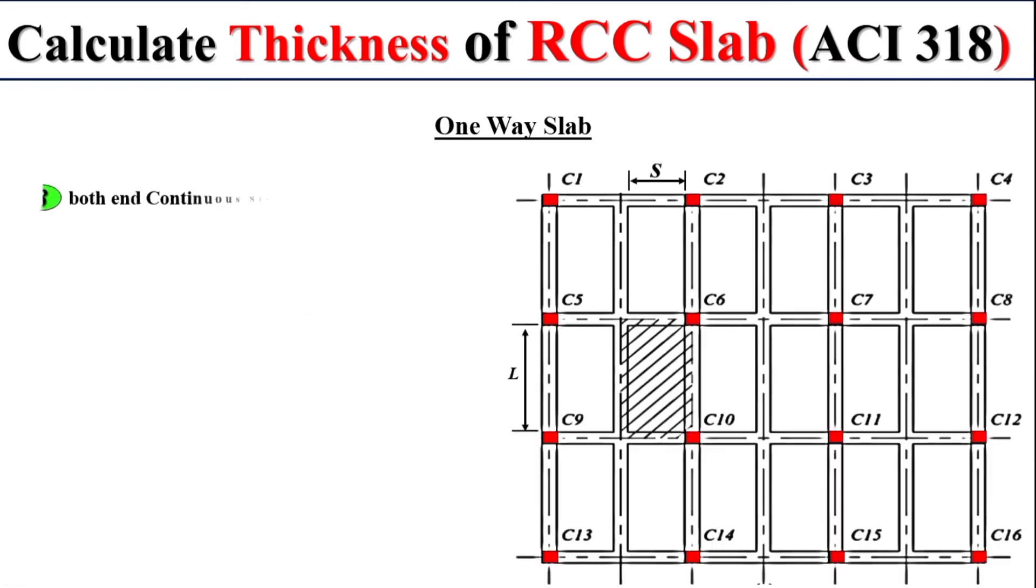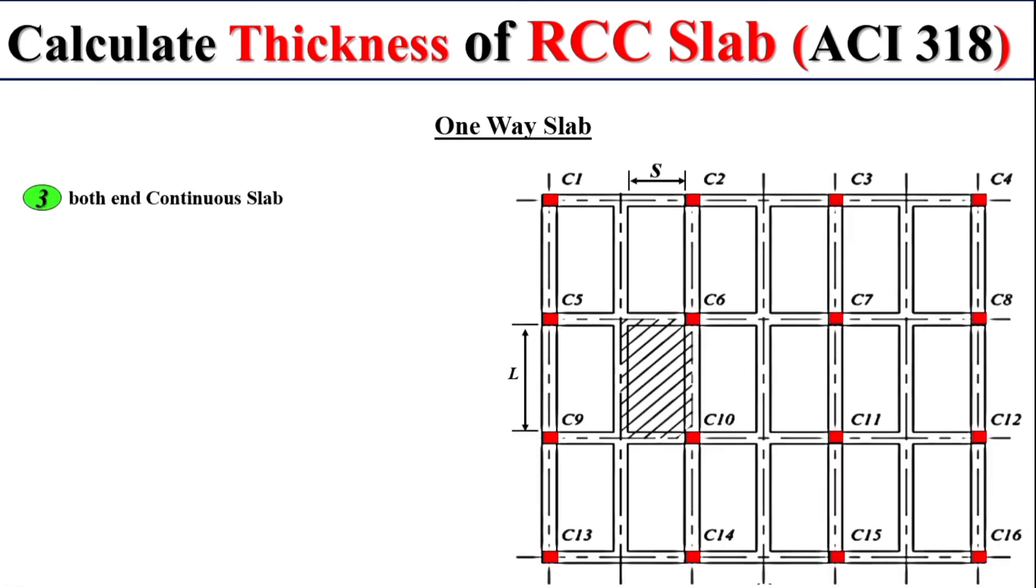Now come to the third one. Let both ends of the slab be continuous. You can see over here, if we are interested to find the thickness of the slab, in this case our slab is continuous in both directions.